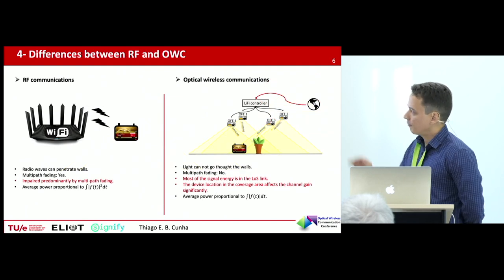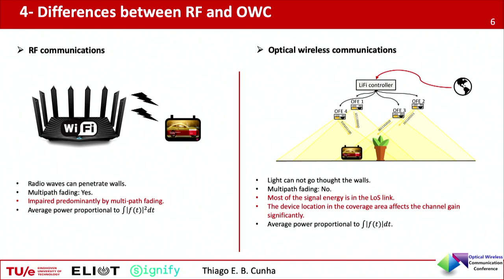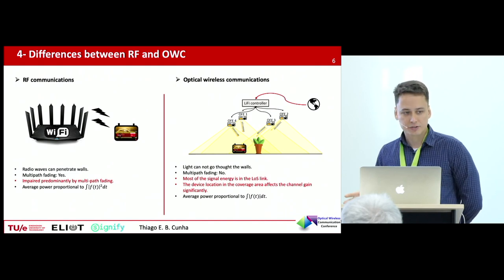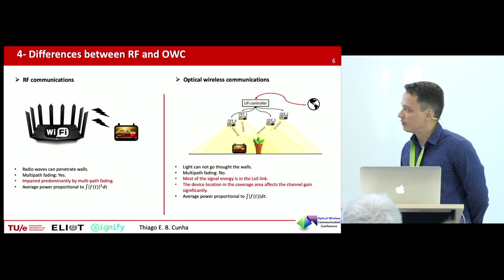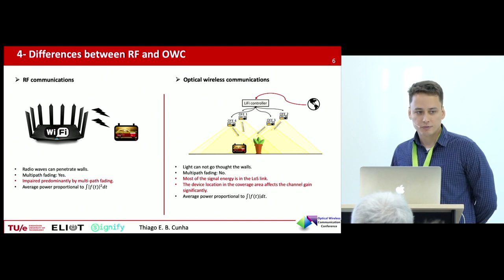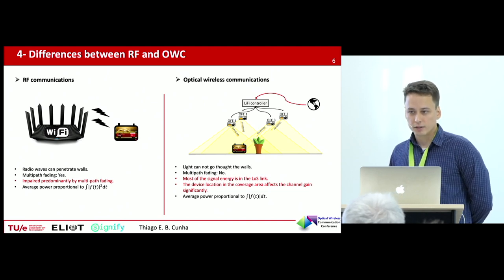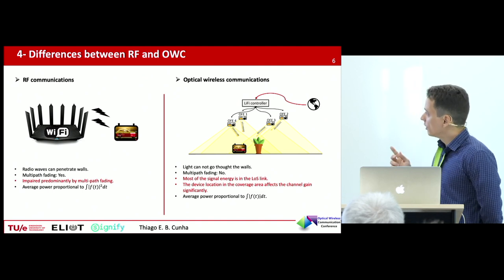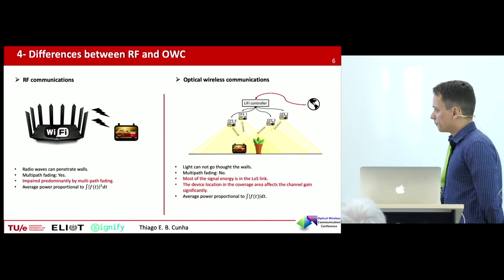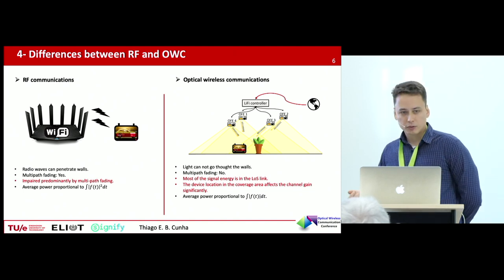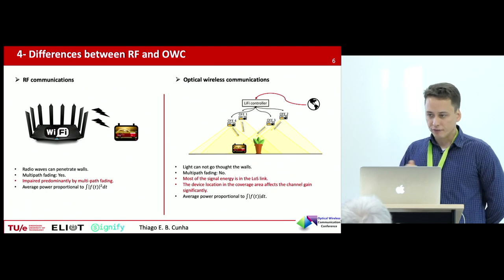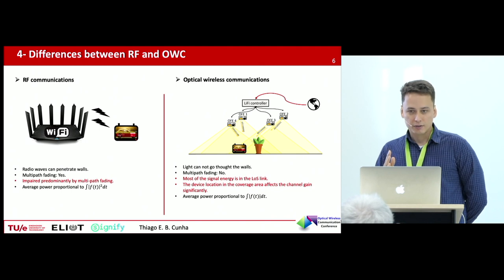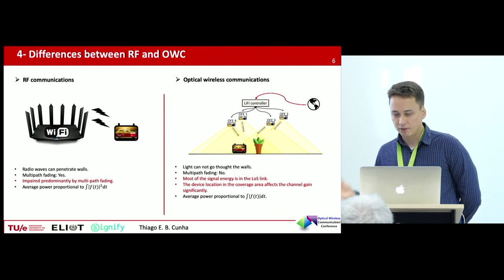We have many differences between RF and optical wireless. In RF, the multipath and reflections inside the environment are more important, so if we space the antennas by half a wavelength, the channel may be independent. But in optical wireless that's different — the line-of-sight channel is more important. Most of the energy of the link is in the line-of-sight link. So the power of the channel is really dependent on the position of the user in the environment and on the orientation of the optical device, and diversity is pretty important in this kind of case.